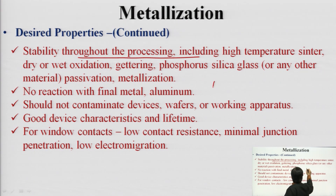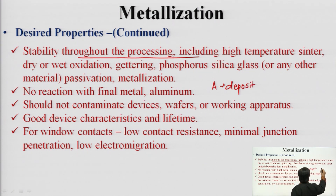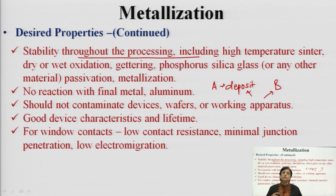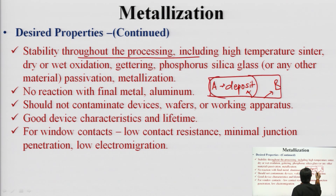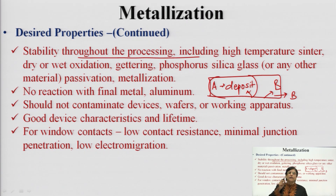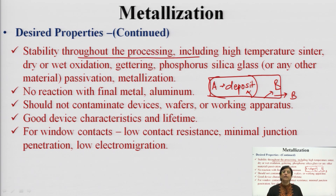For example, if material deposited in process A is present during process B which involves elevated temperature, it should not contaminate the wafer. You must ensure that no material from process A hampers or alters the properties of the apparatus used in process B, or contaminates the wafer surface when process B is being carried out.